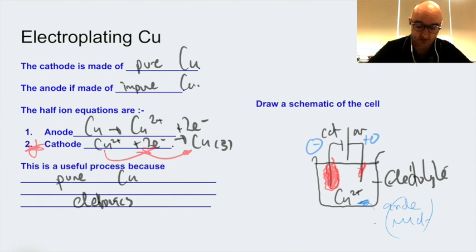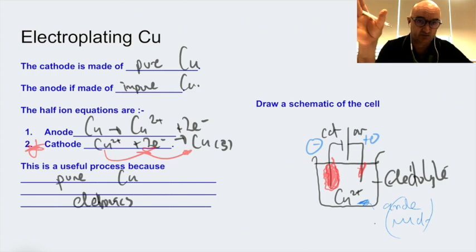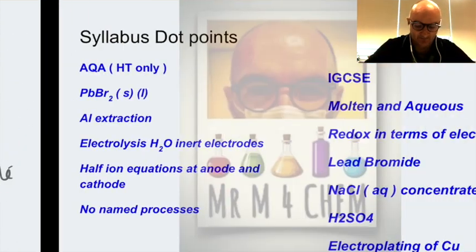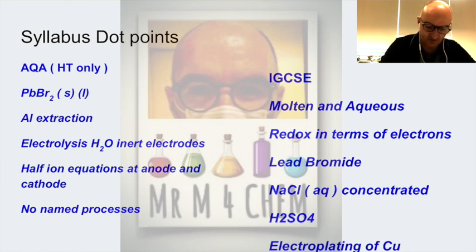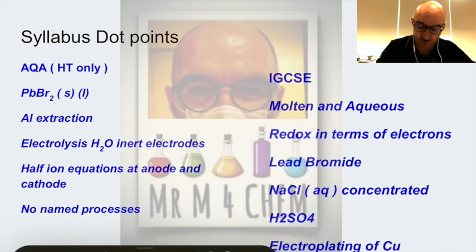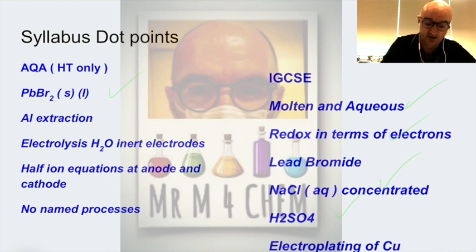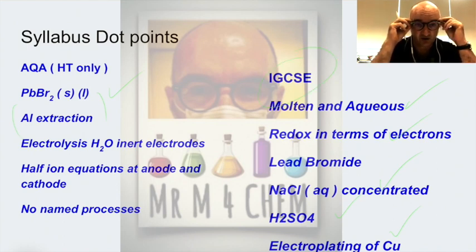Electroplating can also be used to plate a nickel spoon with silver — put silver ions in solution, plate the spoon using the same process. It looks expensive but it's just nickel underneath. Now review your syllabus: do you know lead bromide? Molten and aqueous? Redox? Sodium chloride aqueous? Sulfuric acid — same as water, it persuades water to make H⁺ and OH⁻. Electroplating? And if you're AQA, know your aluminium extraction.